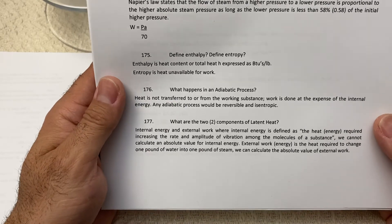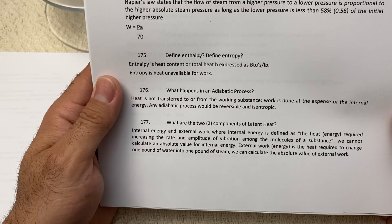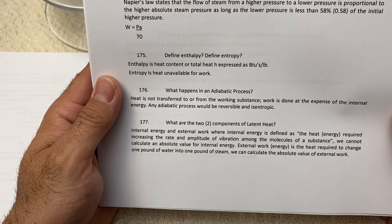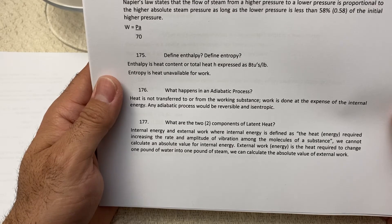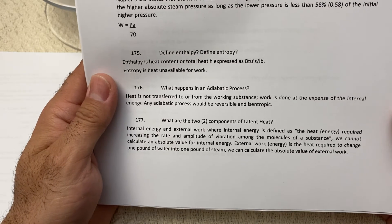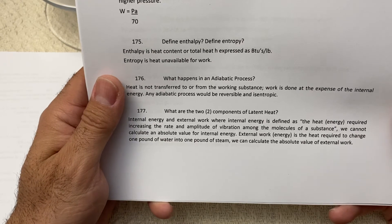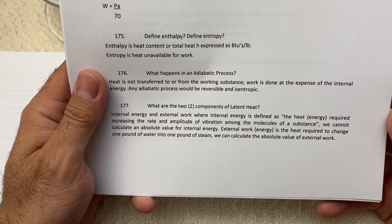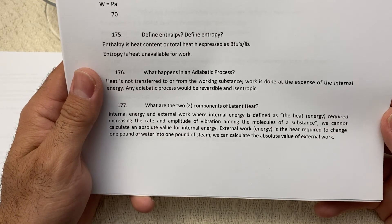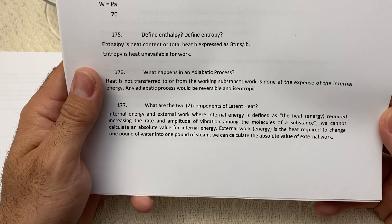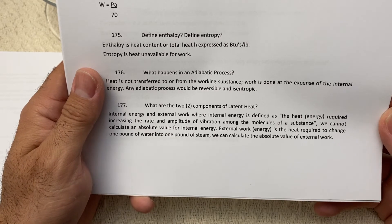To recap: latent heat consists of internal energy and external work. Internal energy is the heat required to increase the rate and amplitude of vibration among the molecules of a substance, and we cannot calculate an absolute value for it. External work is the heat required to change one pound of water into one pound of steam, and we cannot calculate the absolute value of external work either.